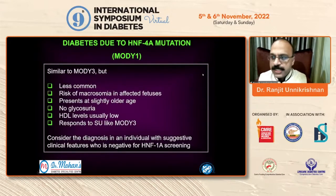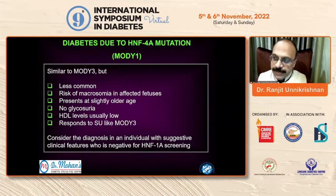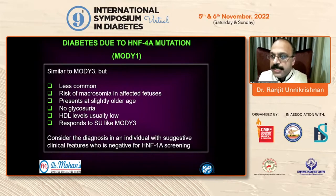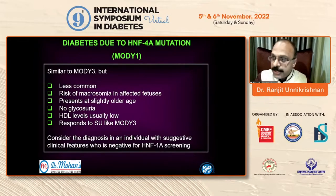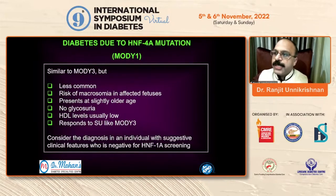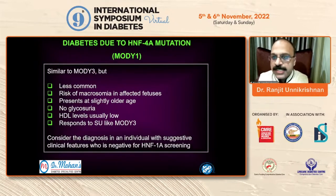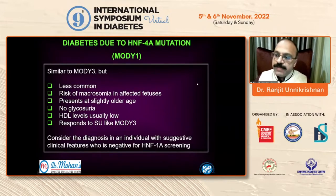MODY-1, due to HNF4-alpha mutations, is very similar to MODY-3 but much less common. They generally do not have renal glycosuria and have an unfavorable lipid profile. There is a biphasic pattern: in utero and neonatal hyperinsulinemia may lead to macrosomia, and babies may be born macrosomic with neonatal hypoglycemia. During childhood they are normal, then beta cell function deteriorates in adolescence. If screening is negative for HNF1-alpha, you then look for HNF4-alpha mutations.